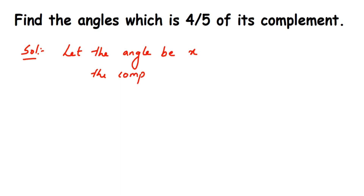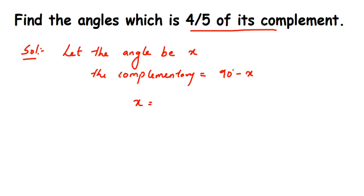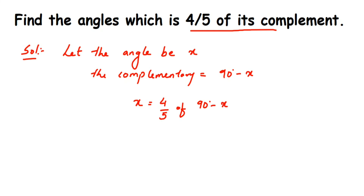The complementary angle equals 90 degrees minus X. Now, the problem says the angle is 4/5 of its complement. So if the angle is X, then X equals 4/5 of the complementary angle. The complementary angle is 90 minus X, so X equals 4/5 of (90 minus X). This gives us our linear equation.